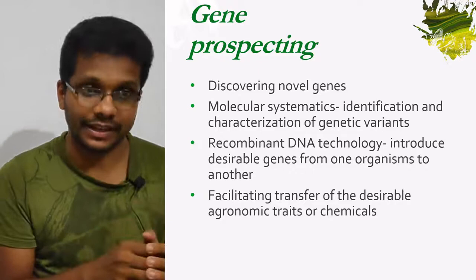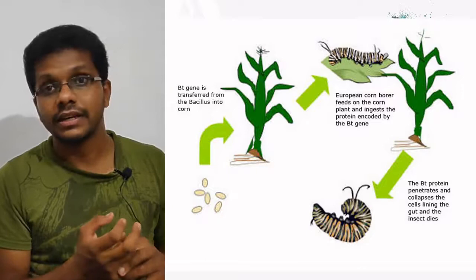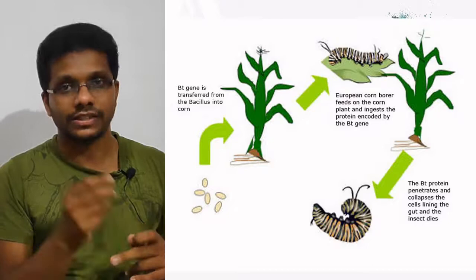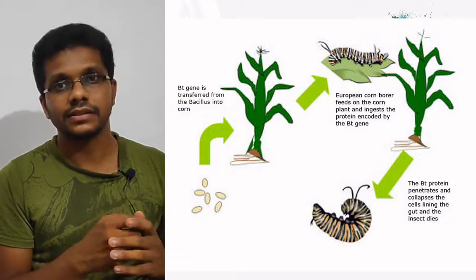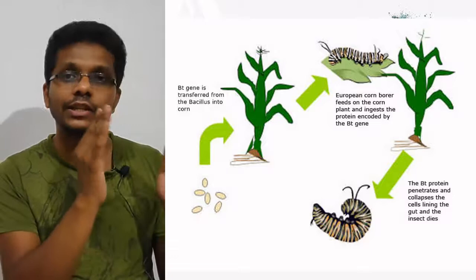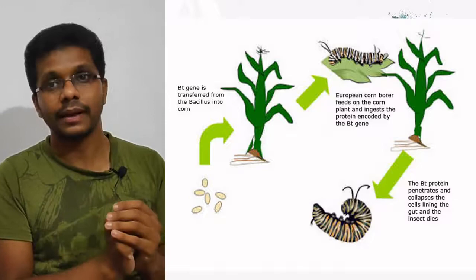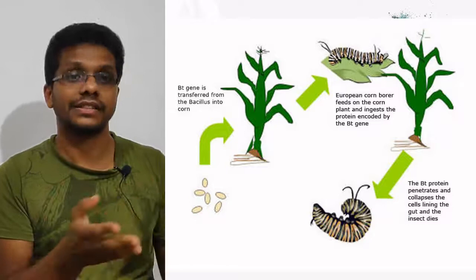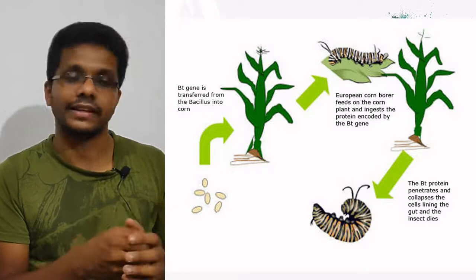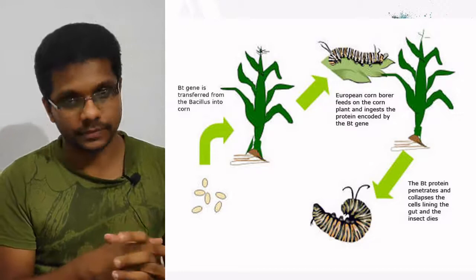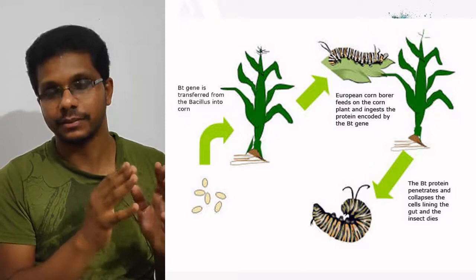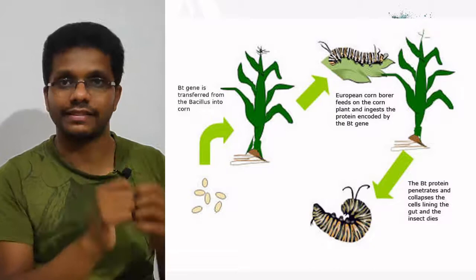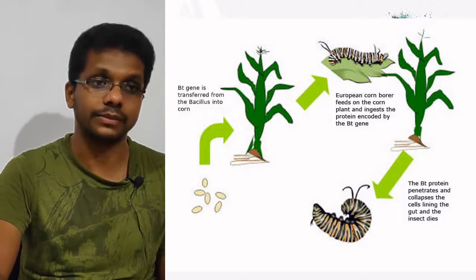Getting a novel gene has many industrial applications. One classical example is Bt cotton. The Bt gene — the Bacillus thuringiensis toxin-producing gene — was found in the bacteria Bacillus thuringiensis, which produced the Bt toxin. The gene encoding the Bt toxin was transferred from the bacteria to the cotton plant. As a result, the cotton plant is able to produce the Bt toxin, which has insect resistance — if insects or larvae eat this plant, they will die. This leads to enormous economic advantages for cotton farming. The Bt gene found in Bacillus thuringiensis was characterized and transferred to a plant to get better economic benefit — that is an example of gene prospecting.